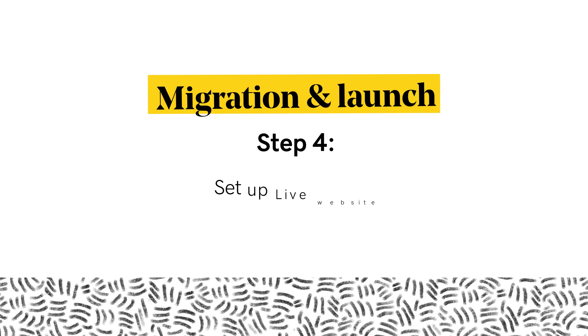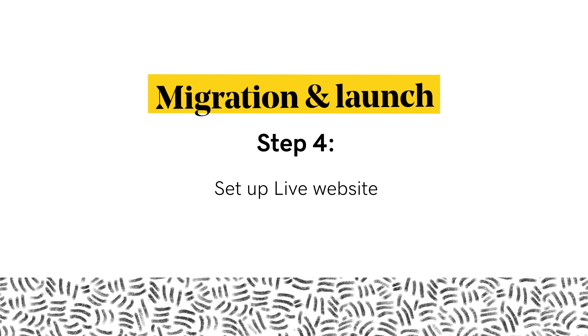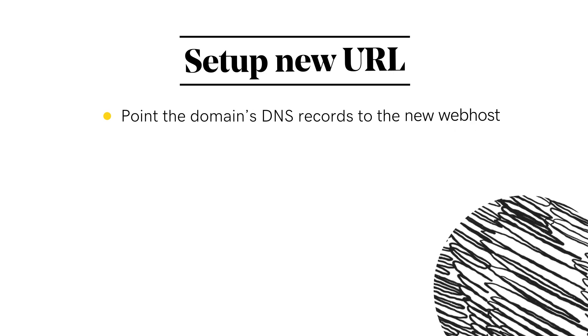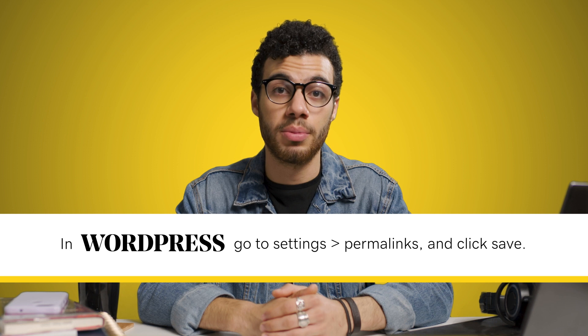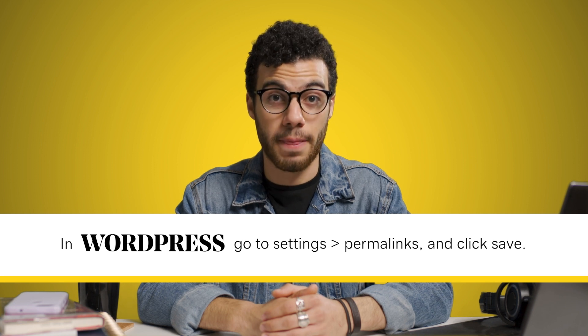At this point the file transfer is complete and the website is ready for you to point to the domain. Edit the domain's DNS records and do some quality control to double-check that the migration went well. To set up the new URL, point the domain's DNS records to the new web host, configure the SSL certificate, and set up a CDN if needed. Make sure the permalinks to your posts and pages are updated — in WordPress, go to Settings, then Permalinks, and click Save. This ensures all permalinks are refreshed to match the new host, since they sometimes get messed up during a migration.